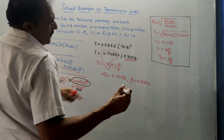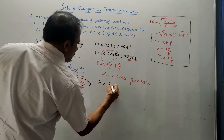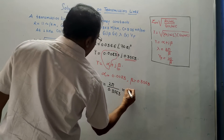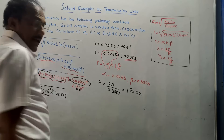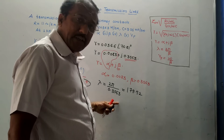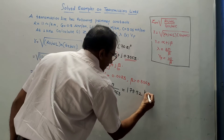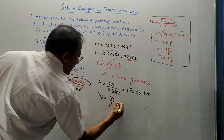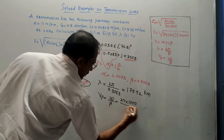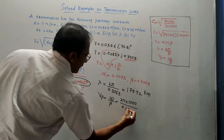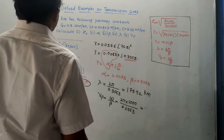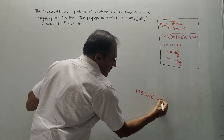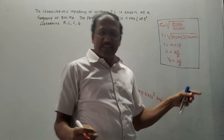The remaining part is lambda and Vp. Lambda = 2π/β = 2π / 0.3563 = 179.52 kilometers. Lambda is the wavelength; the unit is kilometers since transmission line parameters are per kilometer. For velocity of propagation, Vp = ω/β = 2πf / β = 2π × 1000 / 0.3563 = 179.5 × 10³ kilometers per second.